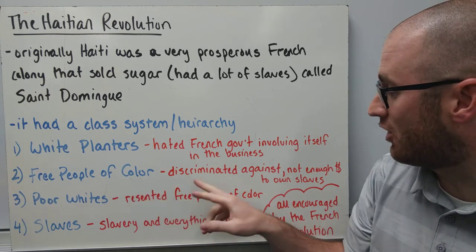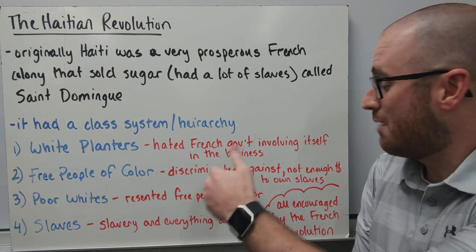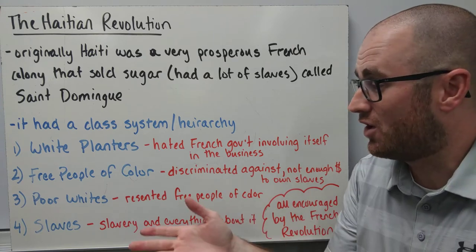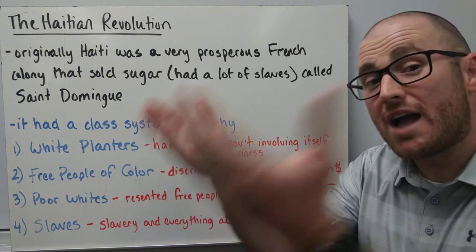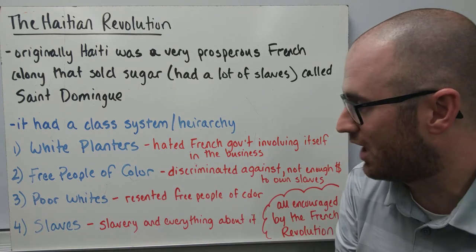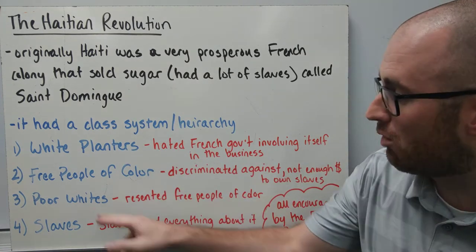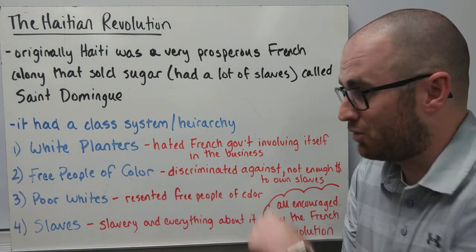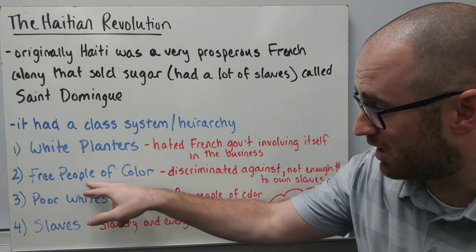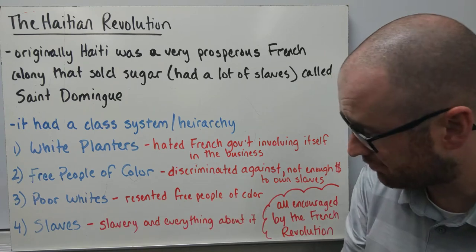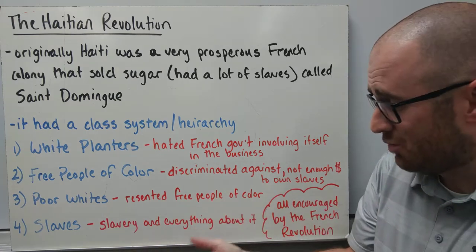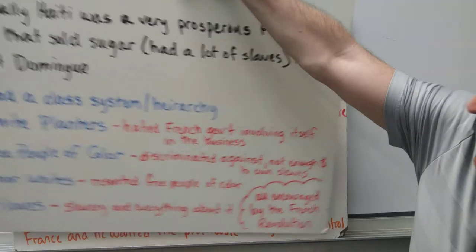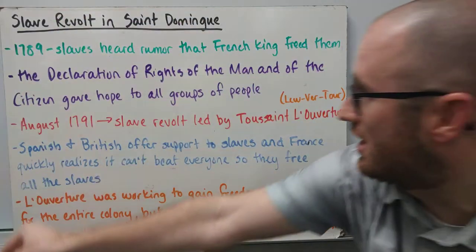The free people of color felt discriminated against because they didn't have enough money to own slaves and could never rise up to the next social class. Poor whites resented the free people of color above them because they had way less money. And then the slaves obviously resented slavery and everything about it, because it's the most inhumane institution ever.